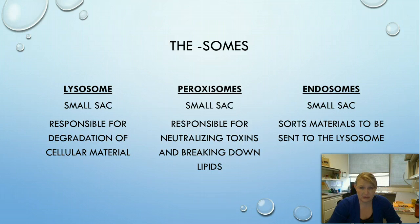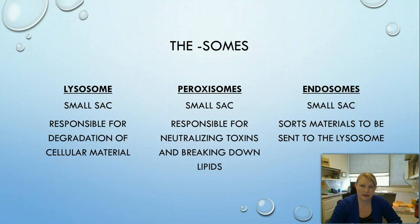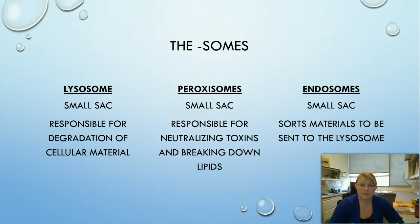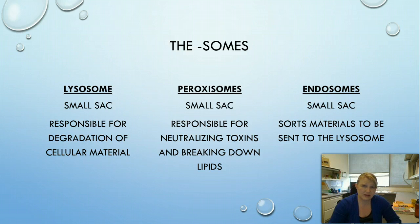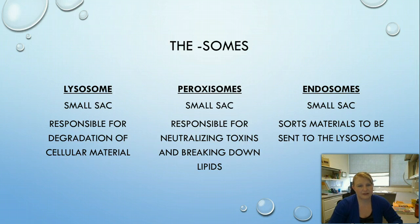Our last three organelles are the 'somes.' Their names are similar so it's easy to mix them up, but they have very different functions. The lysosome is responsible for degradation of cellular material — broken mitochondria, damaged proteins — it's like the trash collector of the cell. Peroxisomes are responsible for neutralizing toxins and breaking down lipids, which is different from degrading proteins. Endosomes sort material brought into the cell through endocytosis, determining what needs to be sent to the lysosome or elsewhere. They all look similar as small sacs but have very different functions.